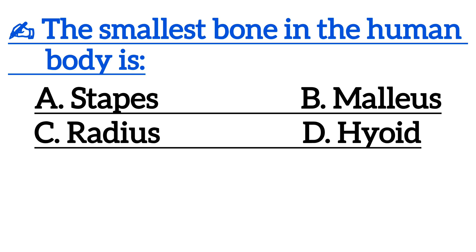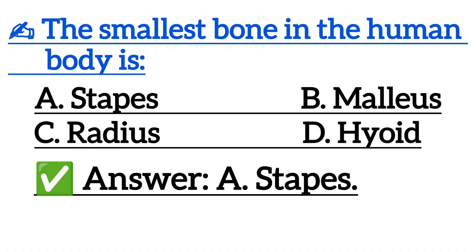The smallest bone in the human body is — correct answer is option C: stapes.